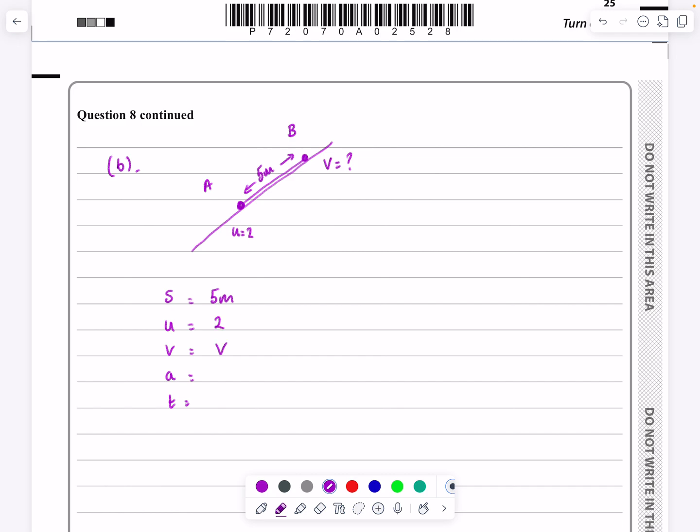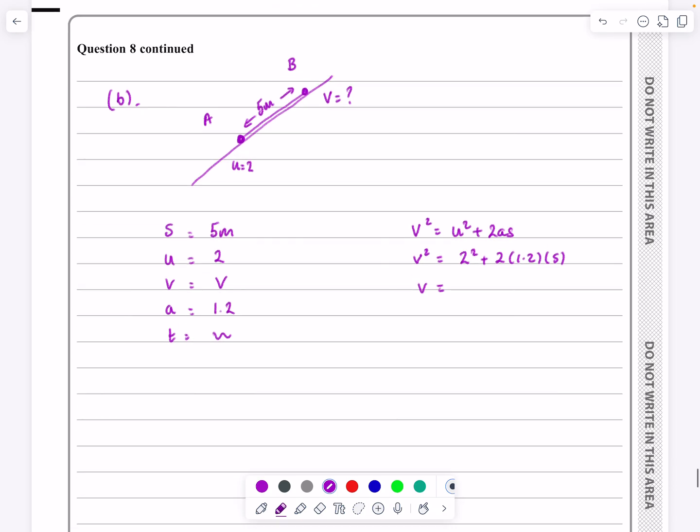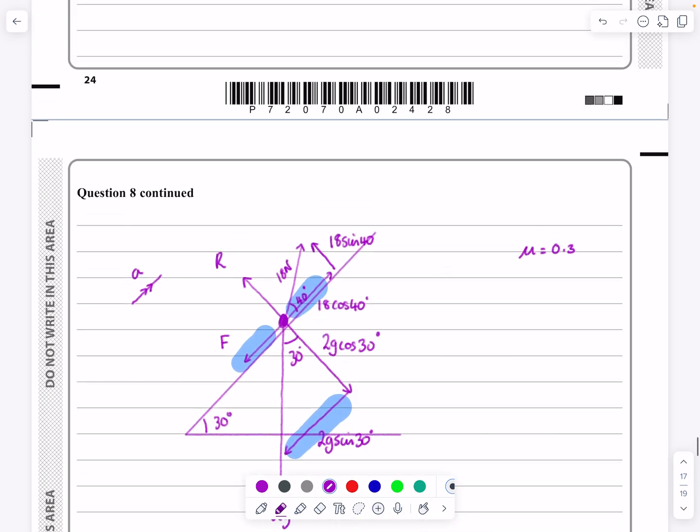It looks pretty much like a classic SUVAT question there. Let's put SUVAT down and see what we can find. So s is equal to 5 metres. U is equal to 2. V is the thing that I'm looking for. And we've just worked out a as being 1.2 or use the exact value you add in your calculator. But I've got s, u, v and a. The SUVAT formula is v squared equals u squared plus 2as. So pretty simple from here. Substitute everything in. 2 squared, 2 lots of 1.2 lots of 5.